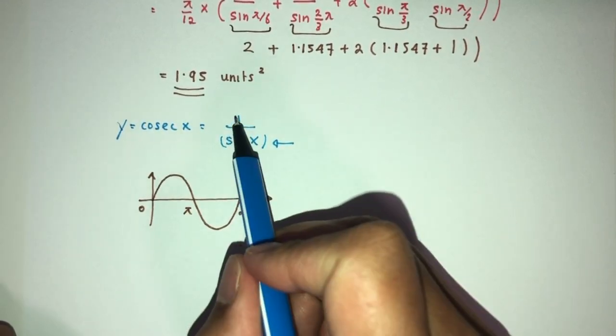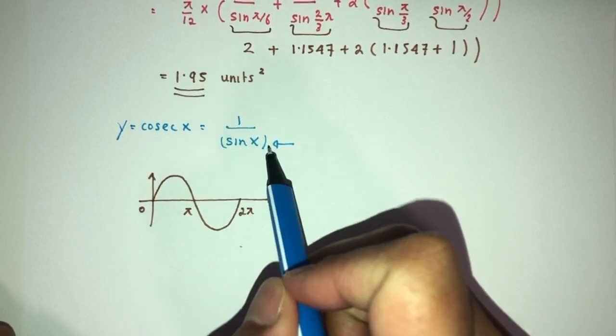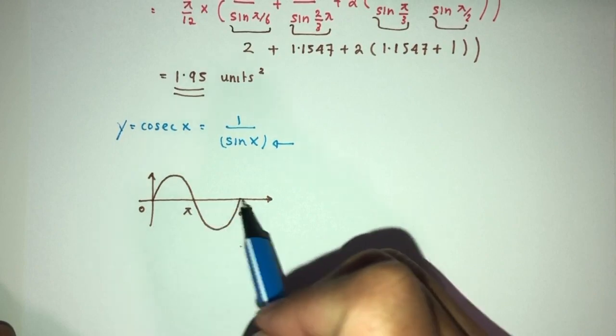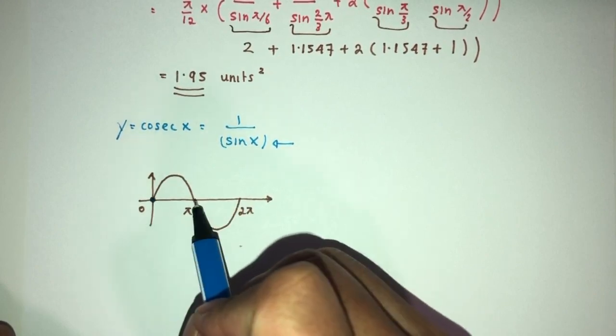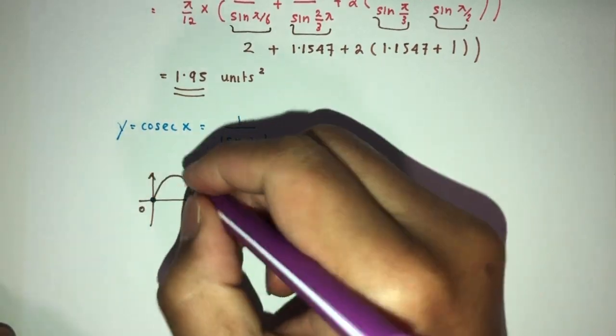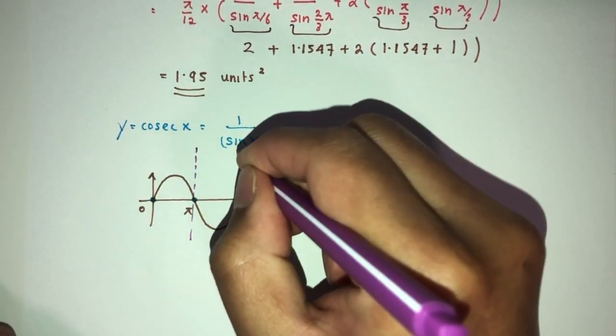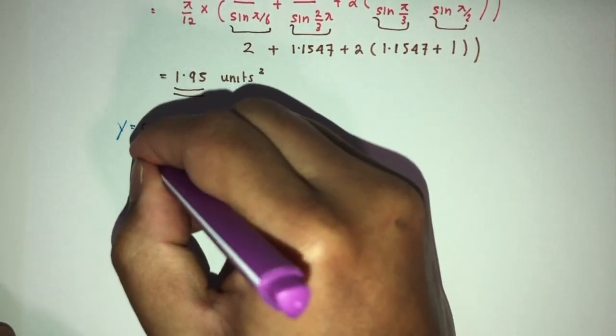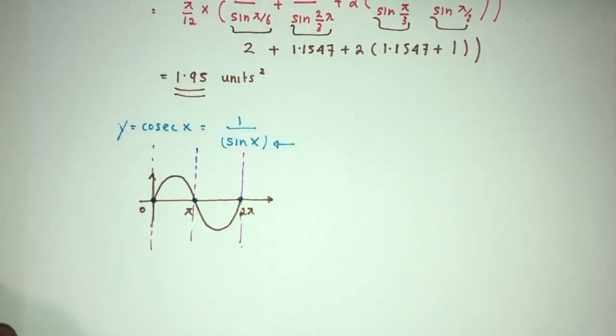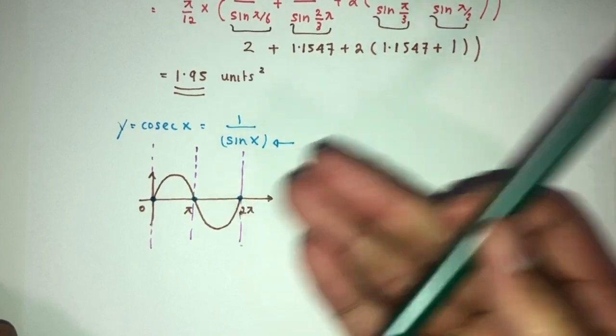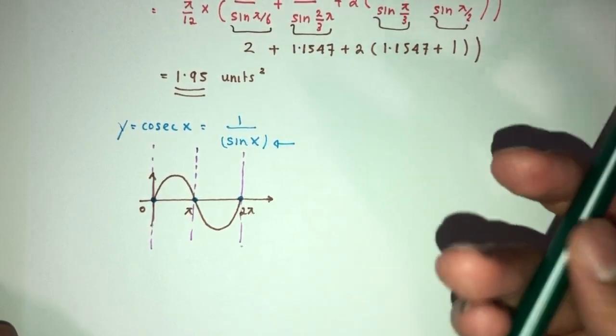Now as I can see, this is 1/sin(x). For sin(x) we have some values where it is zero. When you divide by zero it is not possible. It will create asymptotes. Thus the graph of cosec(x) will look something like this. The answer will be the green color, not the brown.